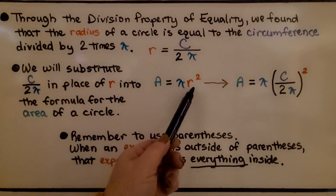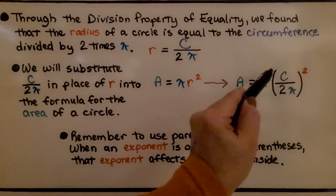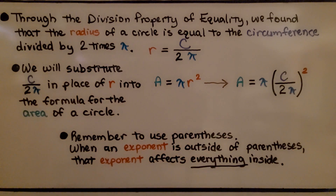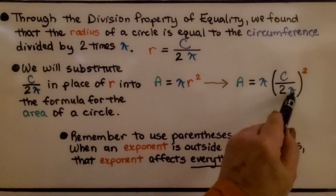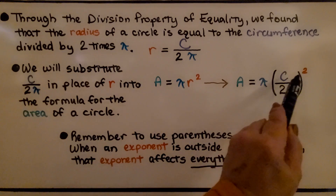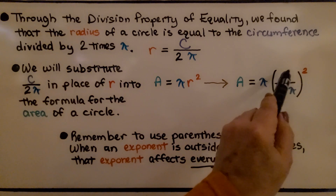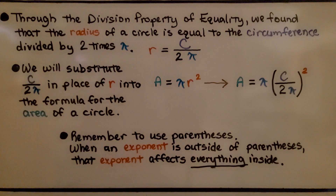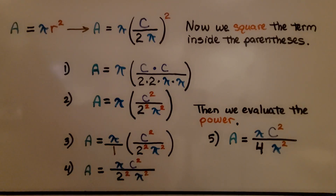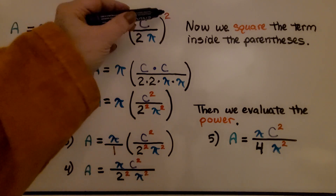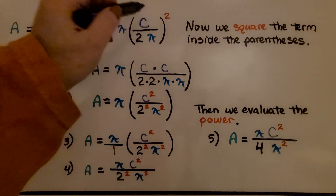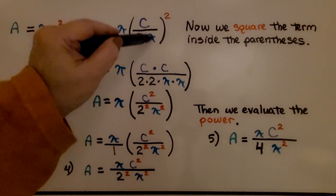So instead of A = πr², we have A = π times (C divided by 2π), all squared. Notice that I used parentheses — when an exponent is outside the parentheses, that exponent affects everything inside. That means we have C to the second power, 2 to the second power, and π to the second power. If we didn't use parentheses, the exponent would only affect C, so we put everything in parentheses with the exponent on the outside.